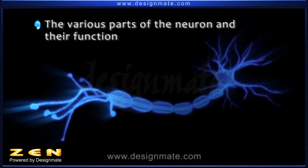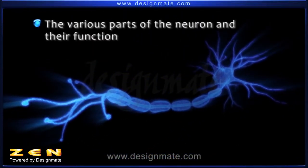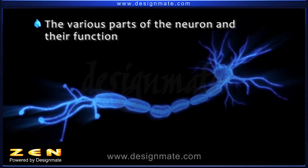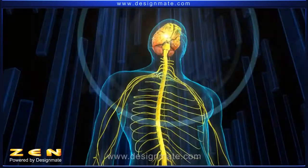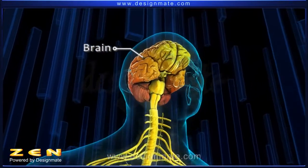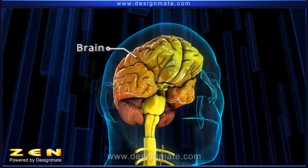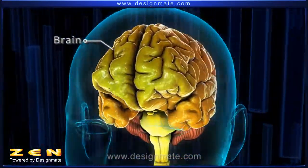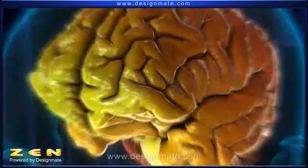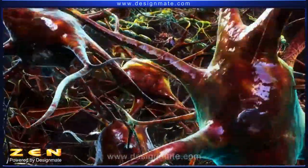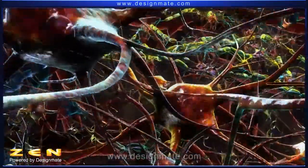To learn about various parts of the neuron and their respective function. In human beings, the brain is the center of the nervous system. A magnified view of the brain shows a network of neurons.